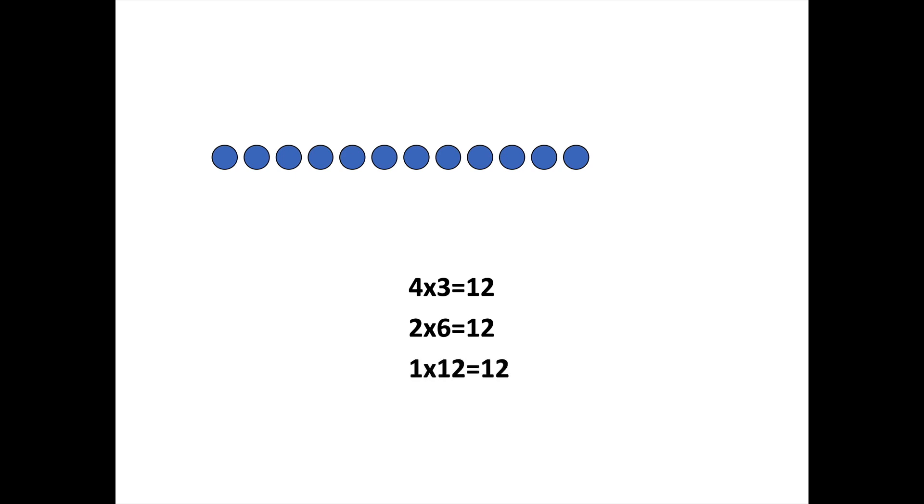As you can see, if you look at the first factor, all we've done is we've divided them in half. So half of 4 was 2 and half of 2 was 1. And then on the other factor, we doubled. So the double of 3 is 6 and the double of 6 is 12. This is why doubling and halving works.